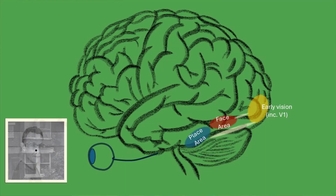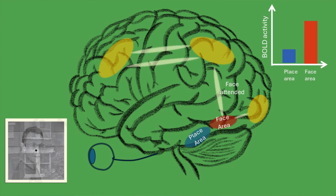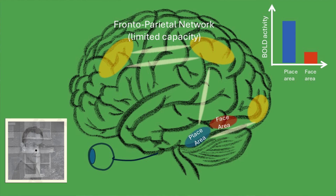What is going on in the brain when you're attending to one thing rather than another? In the example of the superimposed faces and houses, within the visual ventral stream there are specialized areas for processing faces versus processing places such as houses. When we attend to one stimulus, the BOLD activity goes up in the relevant area. If we're attending to faces, BOLD activity in the face area goes up, whereas when we're attending to places, BOLD activity in the place area goes up. So attention is linked to increased activity in specialized systems of the brain.